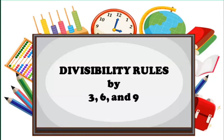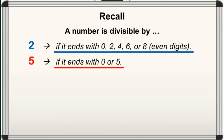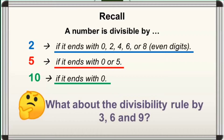Ano nga ba ang mga dapat tandaan para malaman natin na ang numero ay divisible by 3, 6, at 9? Recall that a number is divisible by 2 if it ends with 0, 2, 4, 6, or 8, or in other words, it ends with an even digit. Next, a number is divisible by 5 if it ends with 0 or 5. And lastly, a number is divisible by 10 if it ends with 0.